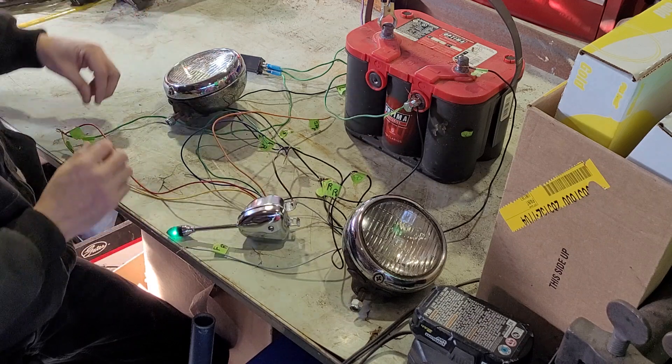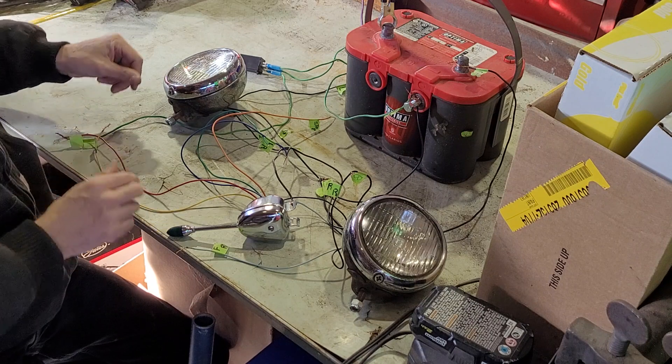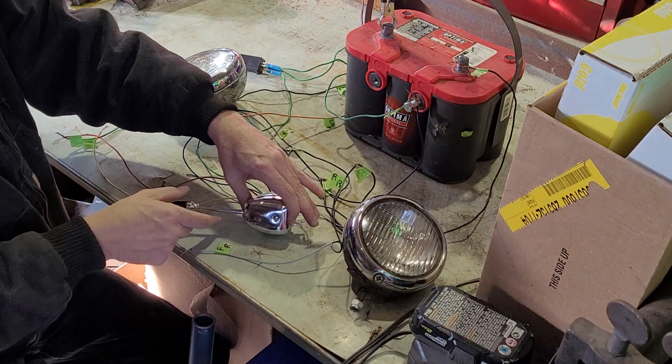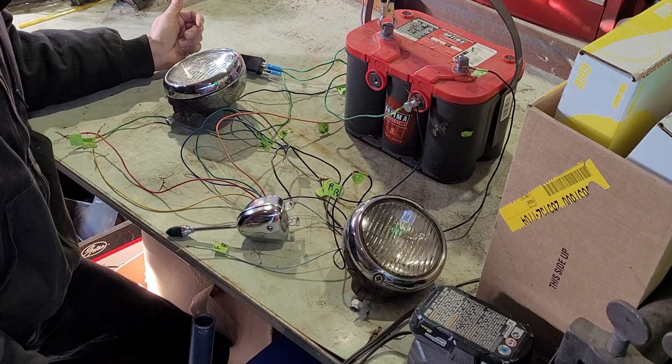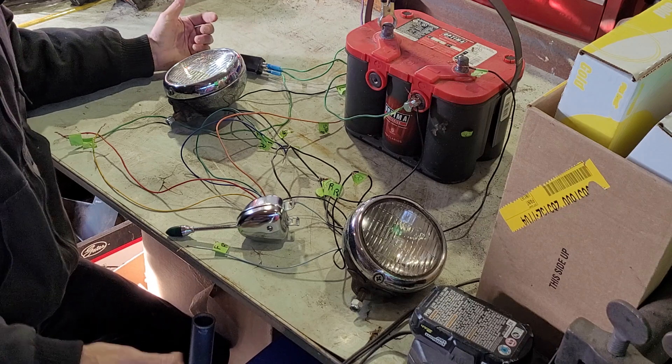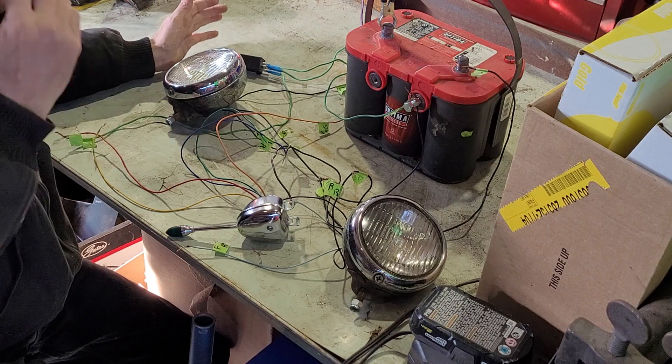But still, the signals will still work without the yellow one connected. Later on we'll do another video of actually installing it in the car. I figured I'd go through the wiring and just do a verbal wiring diagram.